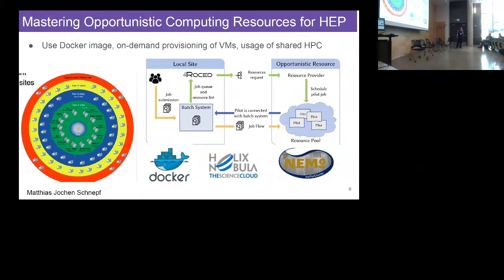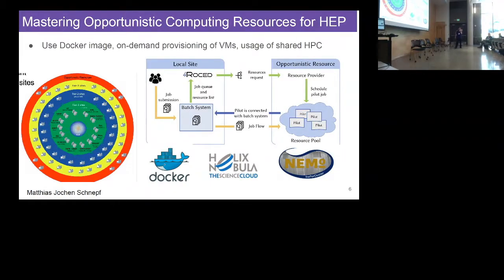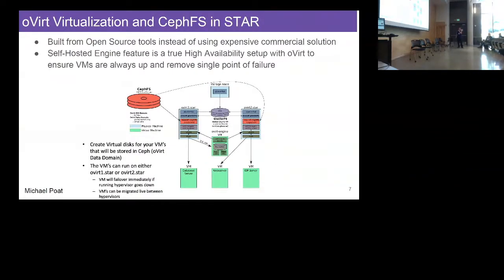Matthias showed a very insightful talk: if you look at our computing model as a tier structure but want to use opportunistic resources — for example, PCs, desktops, private cloud, or high-performance computing — how should we do that? What they do is use a Docker image to get on-demand provisioning of VMs, share high-performance computing, and they have a pilot service making a connection between the base system and the resource pool so when their scheduler makes a request they can effectively get the resource.